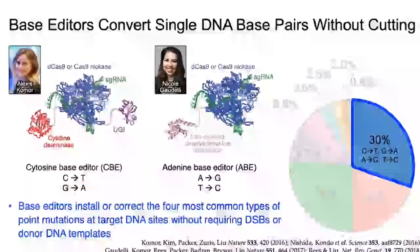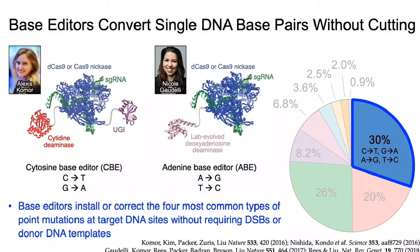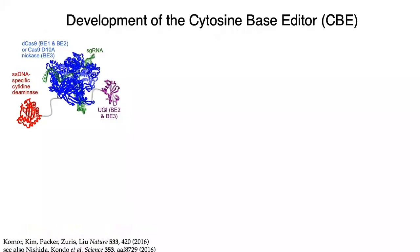To provide one potential solution to this challenge, we developed base editors. Base editors use the targeting mechanism of programmable DNA binding proteins to engage a desired DNA sequence, but instead of cutting the DNA, they use deaminase enzymes from nature—or those evolved in our laboratory—to directly convert one target base into another, and then guide the cell through DNA repair processes to make this conversion permanent on both DNA strands. Cytosine base editors convert C to T or G to A, while adenine base editors convert A to G or T to C. We reported the first base editors four years ago.